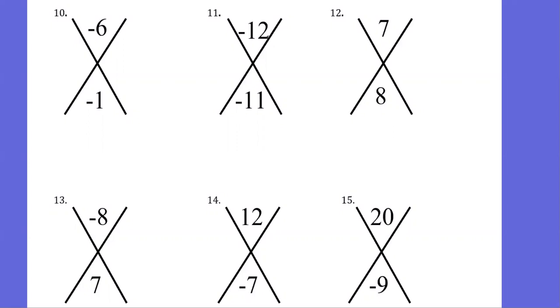So on this one here, I need two numbers that multiply to give me negative six. And at the same time, I need to add these same values to get negative one.